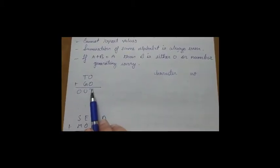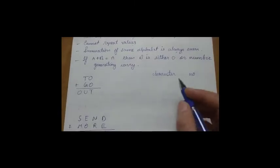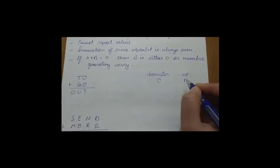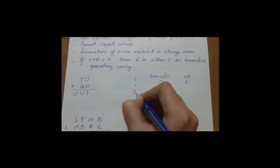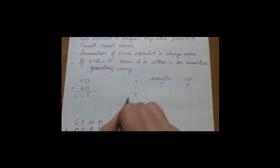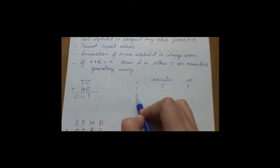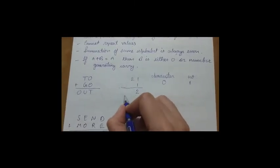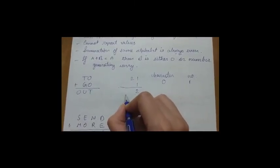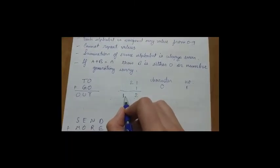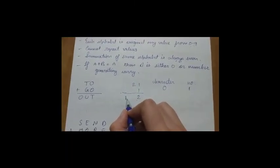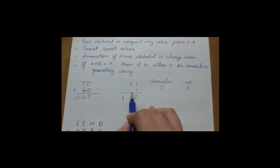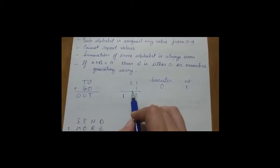I am assigning O to 1, so 1 plus 1 equals 2, so T equals 2. Here T is also 2. In the third position O is also present, so it also equals 1. Now we need to select a value for G that will generate a carry. If I put 9 here, the sum will be 11, but O already has value 1, so we cannot assign 9 to G.